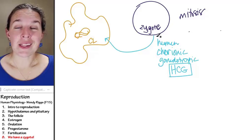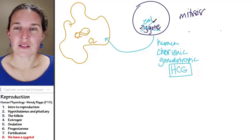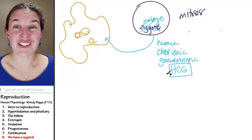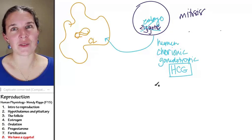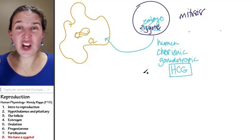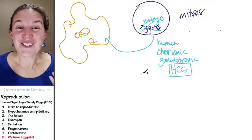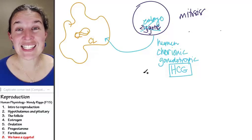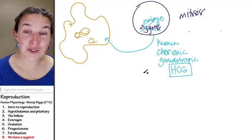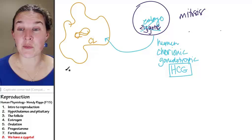The zygote, I mean the embryo, is going to produce HCG. And guess what that's going to do? Stay alive, man. Don't leave me now. So the corpus luteum is going to stay alive and keep producing progesterone because the embryo told it to.